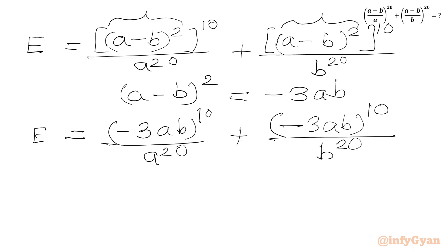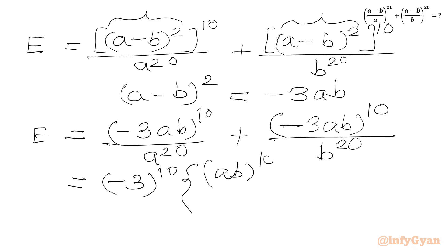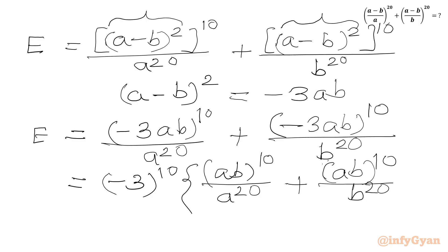Now we can write (-3ab)¹⁰ over a²⁰. We know that (-1) raised to an even power equals +1. So (-3)¹⁰ will be the same as 3¹⁰. Now we will write (ab)¹⁰, and using the exponent law, (ab)ⁿ = aⁿ × bⁿ.